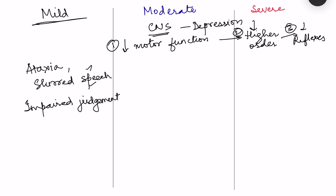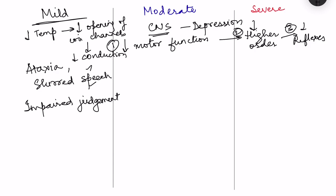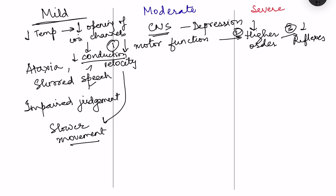This occurs because decrease in temperature causes decrease in molecular motion, reducing the speed of ion channel opening and decreasing conduction velocity. This leads to decreased action potential generation and impaired conduction, resulting in slower movement. However, shivering is still intact in mild hypothermia, though fatigue will gradually set in.